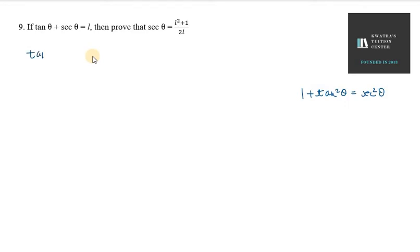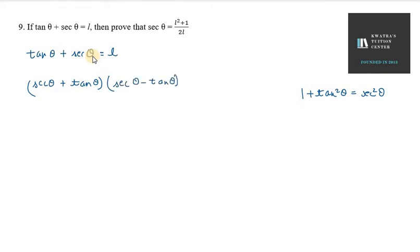We are given that tan theta plus sec theta equals L. On the left hand side, we start with sec theta plus tan theta. We need to rearrange so that we can work with sec squared minus tan squared theta. This can be written as sec theta minus tan theta, and we consider sec theta minus tan theta divided by the left hand side.